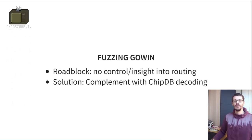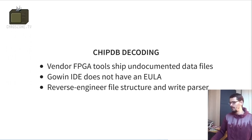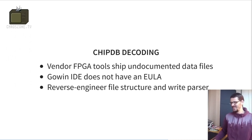The solution is to also look at the files provided by the vendor. The vendor tool has data files that describe their FPGA — they're binary files, completely undocumented. The favorable thing about GoWin IDE is that it doesn't have an end user license agreement like Xilinx or Altera tools that prohibit you from messing with them, so it's perhaps okay to have a peek. I complemented the fuzzing approach by looking at the files the vendor provided.